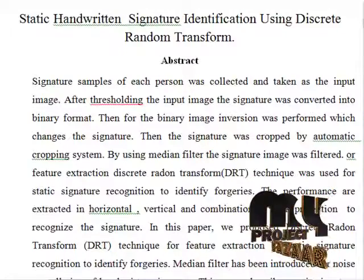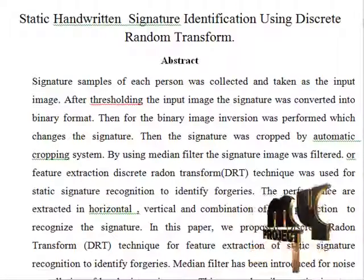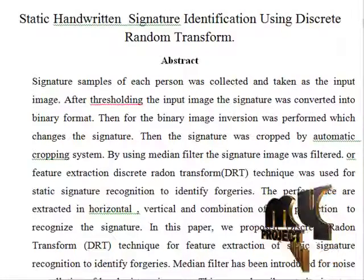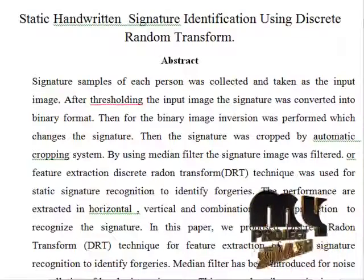After thresholding the input image, the signature was converted into binary format. Then for the binary image, inversion was performed which changes the signature. The signature was then cropped by an automatic cropping system. By using a median filter, the signature image was filtered. For feature extraction, Discrete Radon Transform technique was used for static signature recognition to identify forgeries.